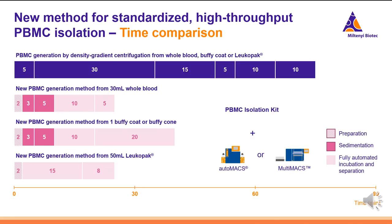Looking at the time comparison between these methods, the Ficoll method can take up to an hour or even longer. With the new PBMC isolation kit and the Automax, we can go from about 30 milliliters of whole blood to untouched PBMCs in about 25 minutes. It takes a little bit longer if you have higher volumes. We also have options for buffy coats, LRSCs, and LeucoPacks. Buffy coats and LRSCs can be processed to PBMCs in about 40 minutes, and a 50 milliliter LeucoPack in about half an hour. So we do have options for other blood products as well, not just whole blood.